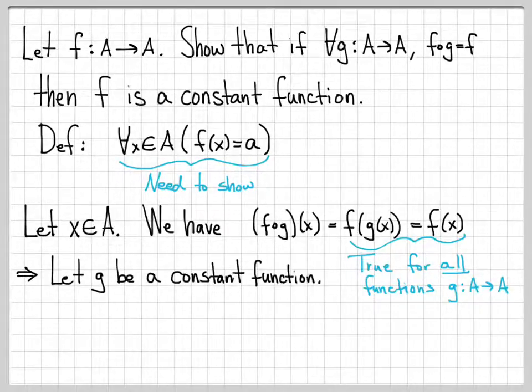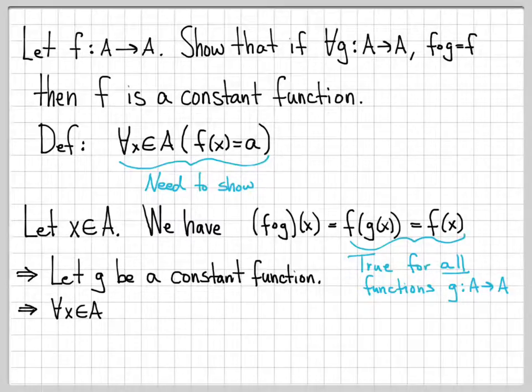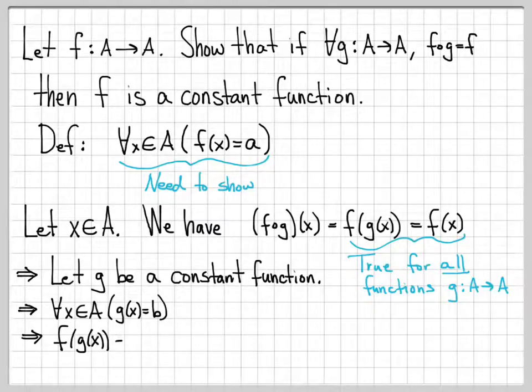Since this is true for every possible function g, let's pick a specific one — let g be a constant function. So for all x in A, g of x equals a constant, which we'll call b (not necessarily the same constant as for f). No matter where we evaluate g, we always get b. Returning to our computation: f of g of x equals f of b, because g of x is the constant b. And f of b is just f evaluated at a point — it's some number, which we'll call c.